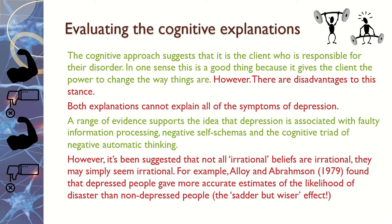Another strength is that it gives clients the power to change — the cognitive approach suggests you just need to change your thinking, and you could be okay and never feel like this again. That's quite empowering, rather than assuming it's a genetic explanation where your mum had it so you'll have it too. However, a weakness is that it might mean we're not considering family or life circumstances, because it's all about you and you changing, whereas actually it could be the family environment causing the stress.